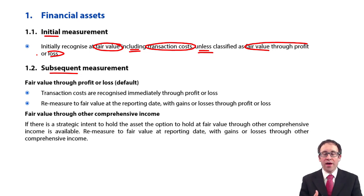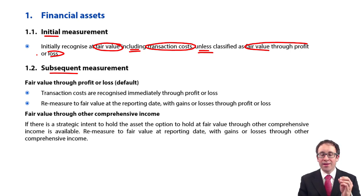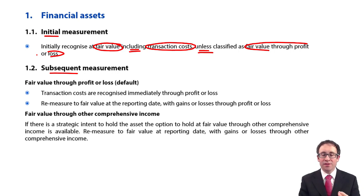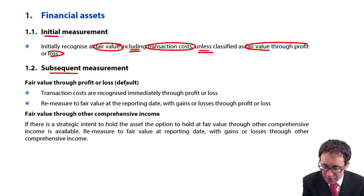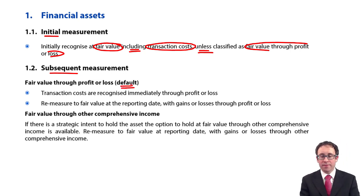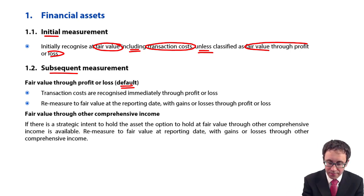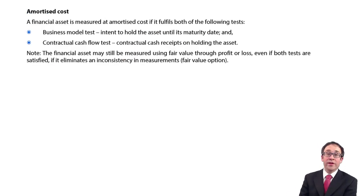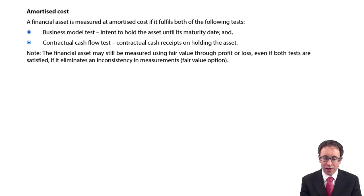So when you initially measure a financial asset, you need to determine whether that financial asset is fair value through profit or loss — which is the default category — fair value through other comprehensive income, or this amortised cost type of financial asset.